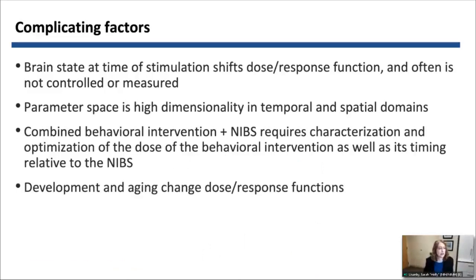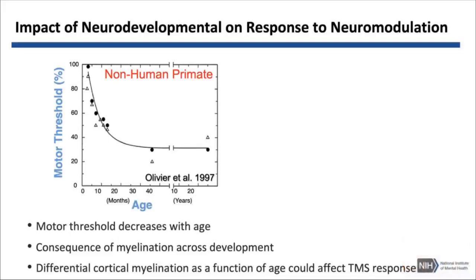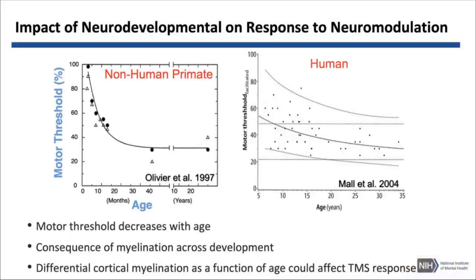Another complicating factor is development — the age of the subject, and of course that's a moving target. Neurodevelopment and aging will change dose response functions. Here you see a dose response function in non-human primates and in humans, where on the x-axis is age and on the y-axis is the motor threshold. Characterizing how the brain is developing — changes in white matter, myelination, and cortical thickness — are all important to take into account.